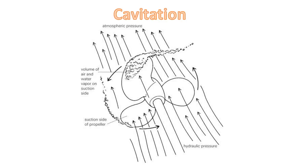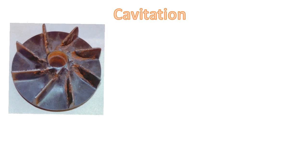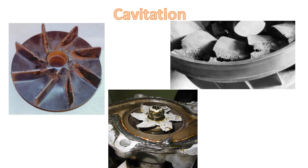The implosion creates a shock wave which impinges on the impeller vanes and face, which can cause damage including pitting, erosion, and failure. This activity also creates noise and the pumping efficiency declines due to the high amount of vapor in the system.